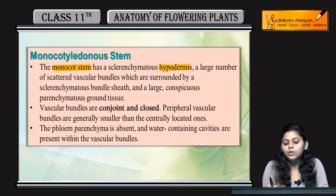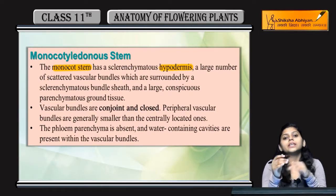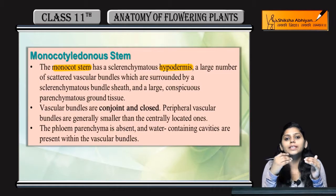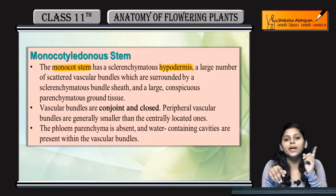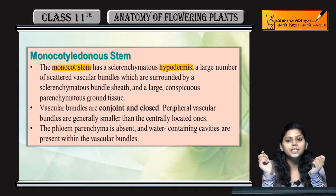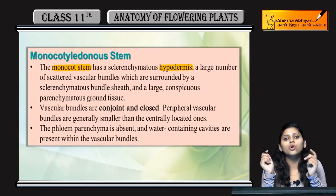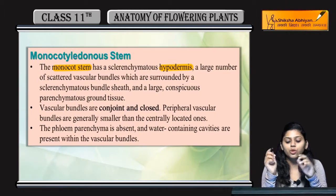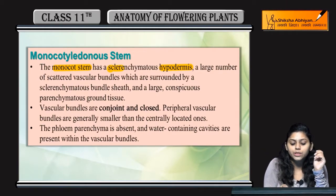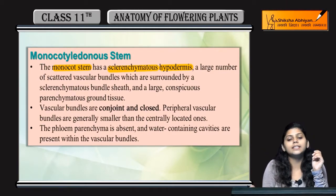Hypodermis. The hypodermal layer comes after the epidermis. In case of dicot, we studied that hypodermis was made of collenchyma. And in monocots, it is made of sclerenchymatic tissues.